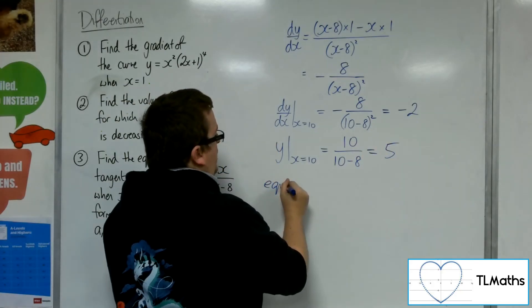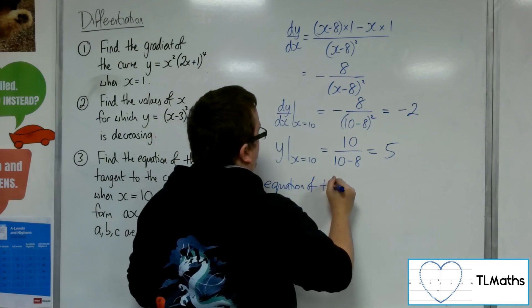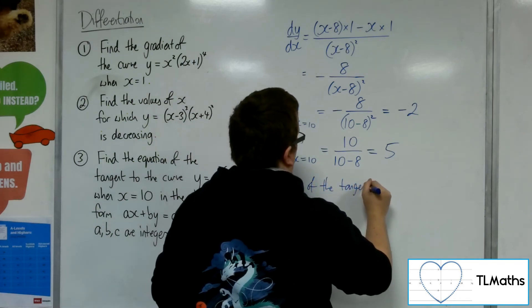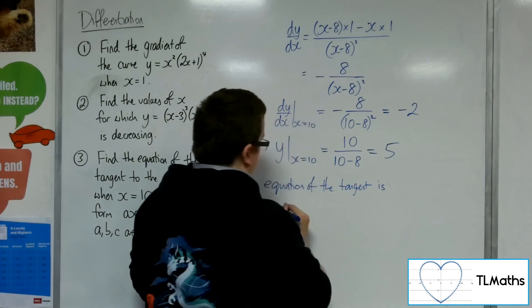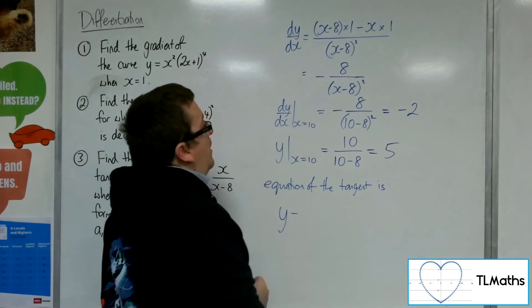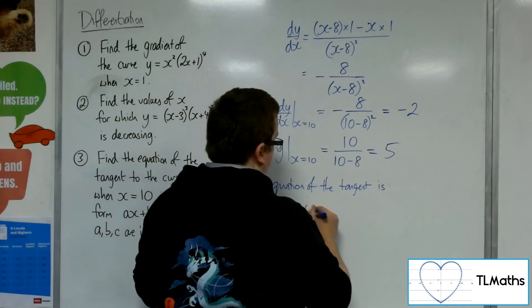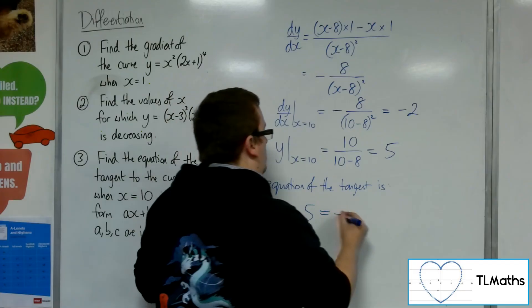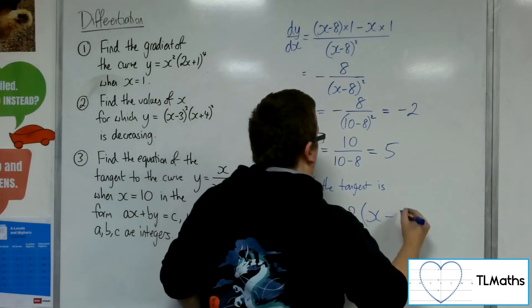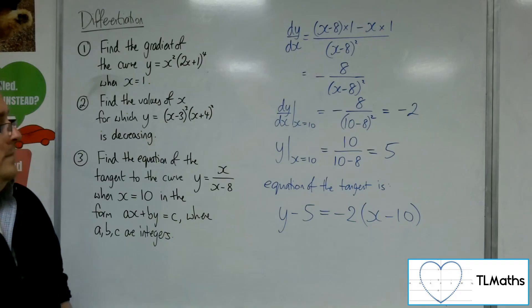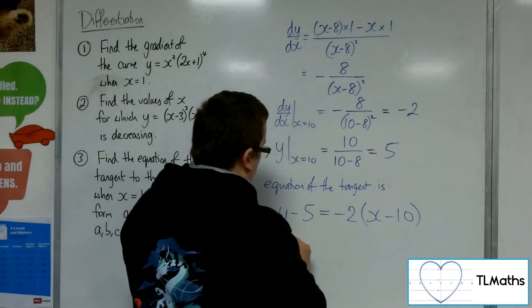So the equation of the tangent is... Now using y minus y1, so y minus 5, is equal to m times x minus x1. So multiply this through.